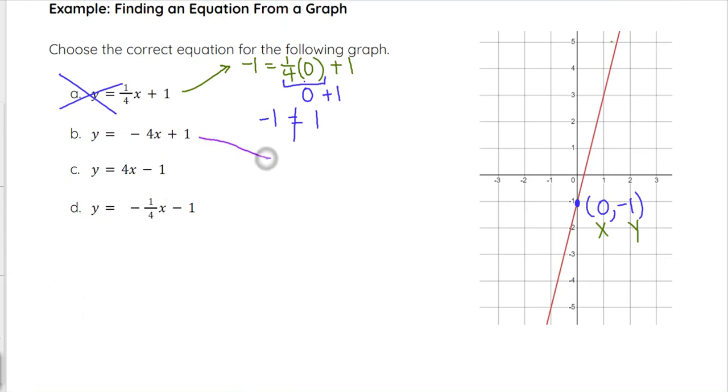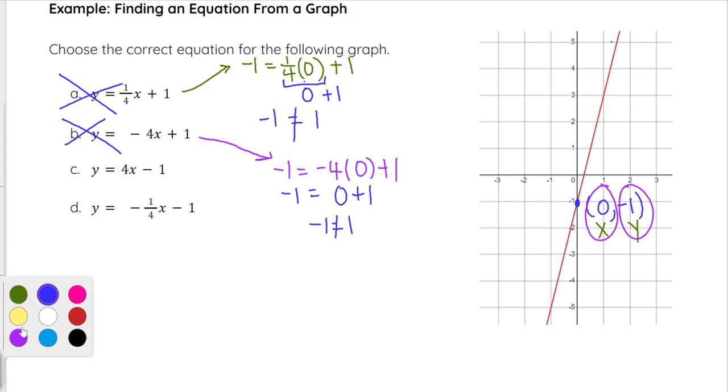Then we do the same thing with answer choice B. We set up negative 1 equals negative 4 times 0 plus 1, just plugging in our x and our y. We have negative 1 equals 0 plus 1. 0 plus 1 is 1, so negative 1 equals 1 is not a true statement. So right now we've eliminated two of our answer choices.